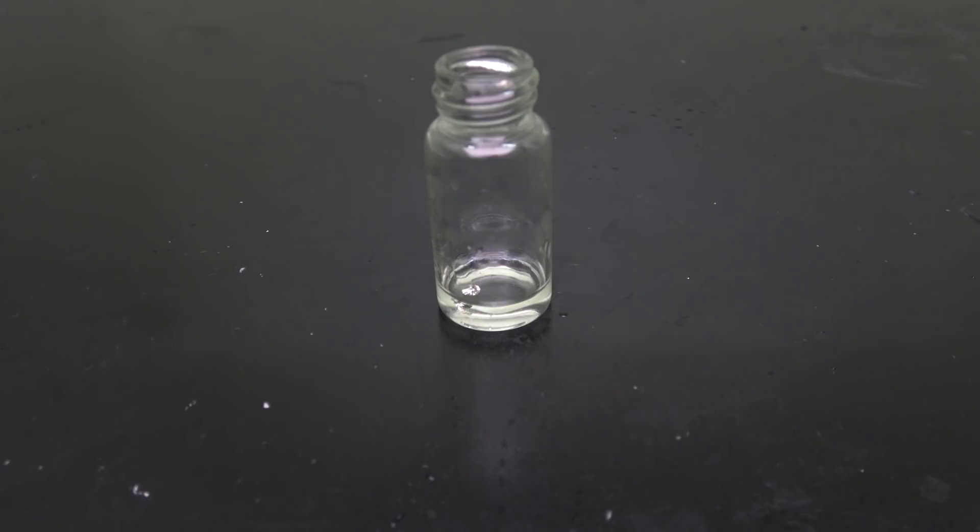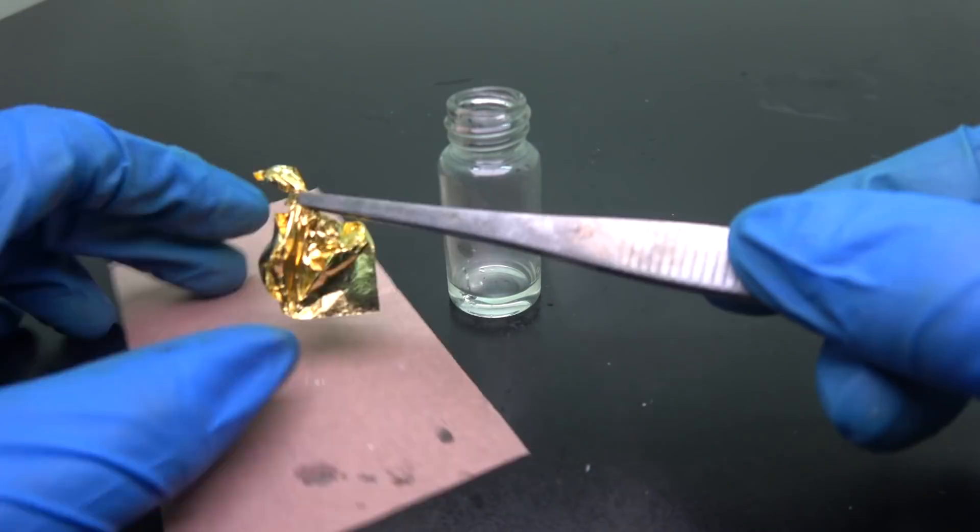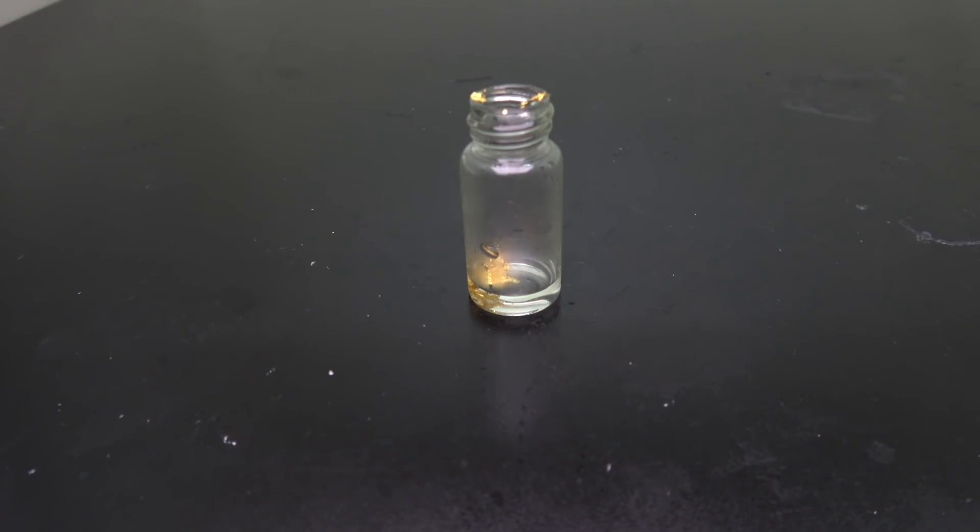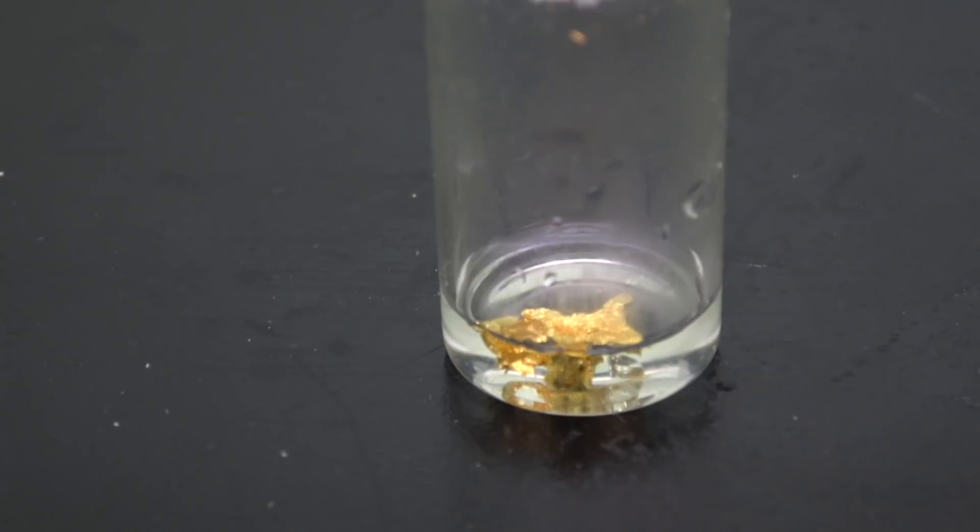It is well known for being able to dissolve noble metals such as gold and platinum. In order to demonstrate how different aqua regia is from its individual components, I'm going to throw in a piece of gold leaf.